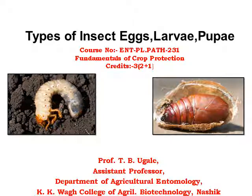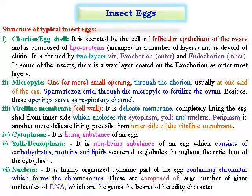Hello friends, this is Professor Tushar Udley, working as a studio professor at the Department of Agriculture and Technology, KKVAR College of Agriculture Biotechnology, Nasi. Today we will go through our second presentation on metamorphosis, that is the types of insect eggs, larvae and pupa. In the last lecture we saw the different types of metamorphosis and its significance in the insect life cycle. Today we will see the insect egg, the types of pupa and larva, their modifications and adaptations.